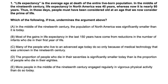It says: life expectancy is the average age at death of the entire live-born population. In the middle of the 19th century, life expectancy in North America was 40 years, whereas now it is nearly 80 years. Thus, in those days, people must have been considered old at an age that we now consider the prime of life.